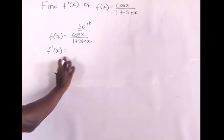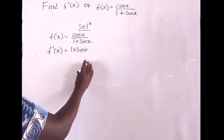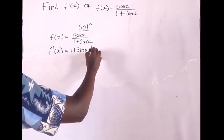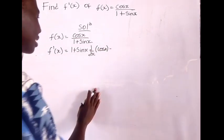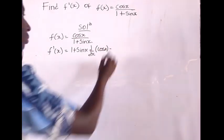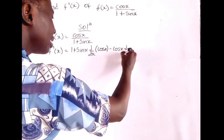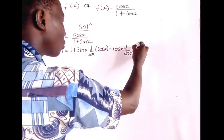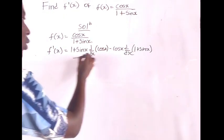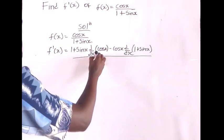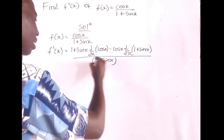The derivative of f(x) is equal to: (1 + sin x) · d/dx of cos x, minus cos x · d/dx of (1 + sin x), all over (1 + sin x) squared.